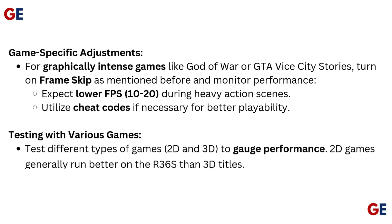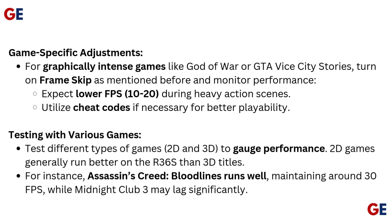Game-specific adjustments: for graphically intense games like God of War or GTA Vice City Stories, turn on frame skip as mentioned before and monitor performance. Expect lower FPS of around 10–20 during heavy action scenes. Utilize cheat codes if necessary for better playability.